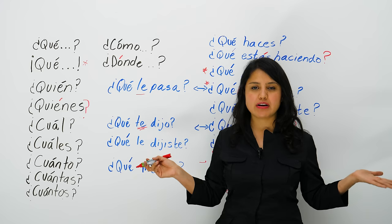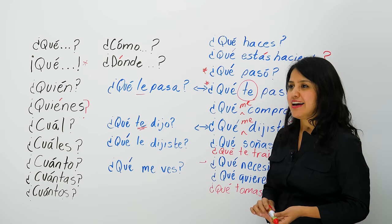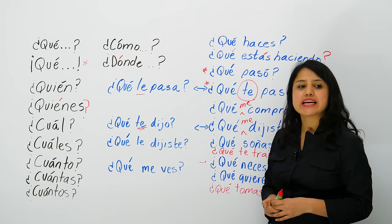And you can say something a bit rude: '¿Qué me ves?' — what are you looking at me for. Now, you're learning Spanish, so I can't insult you for looking at me — you're learning. But if you're on the subway and someone stares at you, you could say qué me ves.